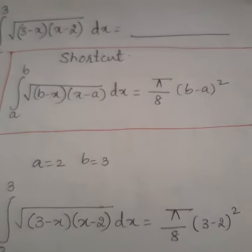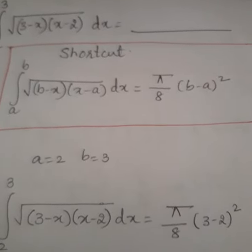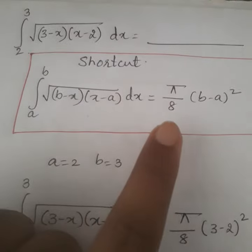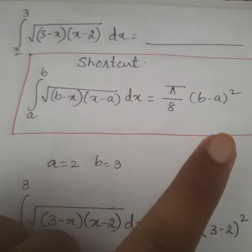In order to solve this problem, we have one shortcut. The shortcut is: integral from a to b of square root of (b minus x) times (x minus a) dx equals π/8 times (b minus a) squared.